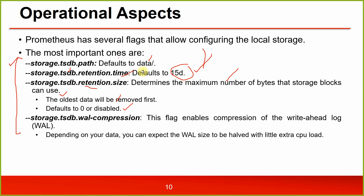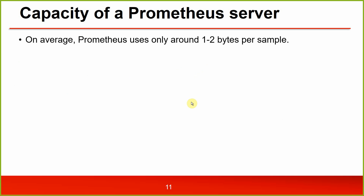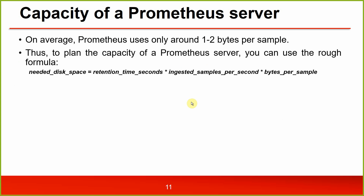storage.tsdb.wal-compression enables compression for the write-ahead log. Depending on your data you can expect WAL size to be halved with little extra CPU load. For capacity planning of a Prometheus server, on average Prometheus uses only around 1–2 bytes per sample. You can use this rough formula: needed disk space = retention time (seconds) × ingested samples per second × bytes per sample.